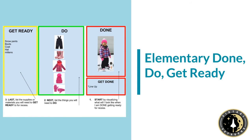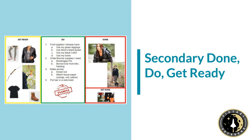Very young learners can become quite independent with a wide variety of tasks when supported through this planning process. For example, by visualizing what she looks like when she goes outside to play in the snow, a kindergartner can work backward to gather and put on all of her snow gear independently. Once the routine has been practiced, parents can simply take a picture of the end result and ask the child to match the picture. Older students can use this strategy for the planning of almost any task.